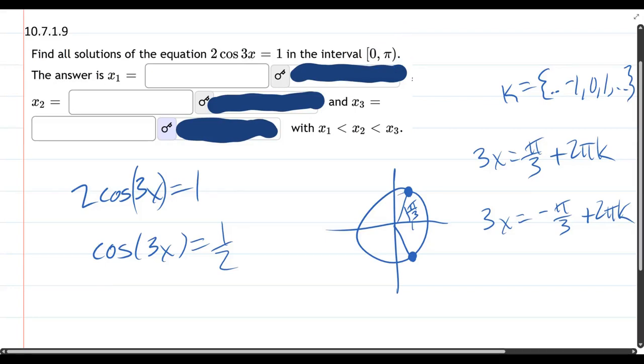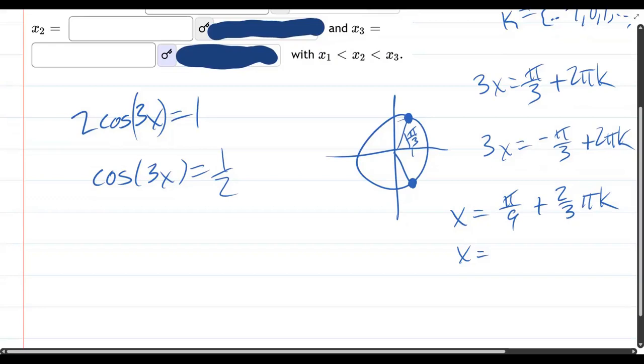We're going to solve for x now. Divide both of these by 3. So pi over 3 becomes pi over 9, plus 2 thirds pi k. The second, divide this by 3, we have negative pi over 9, plus 2 thirds pi k.